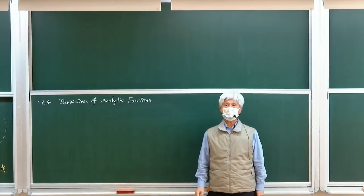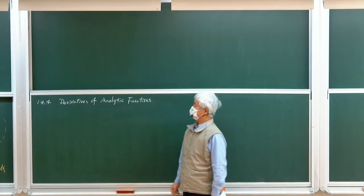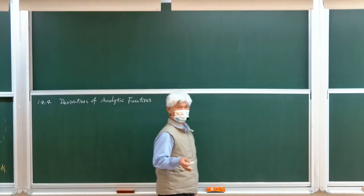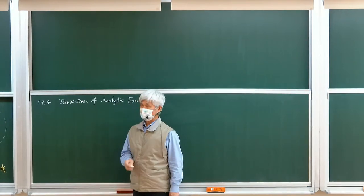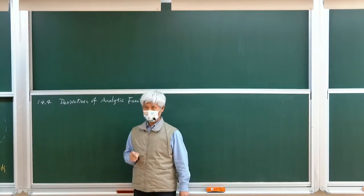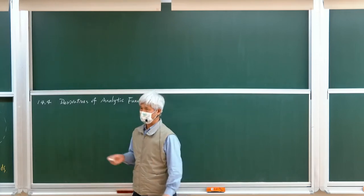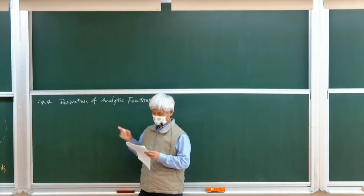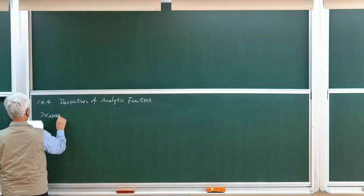In Chapter 13, when we discussed Riemann-Cauchy equations, we mentioned that if we have an analytic function then this function has derivatives of all orders for all n. We are going to prove this fact in this section.